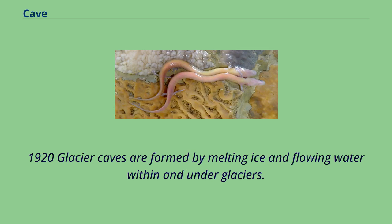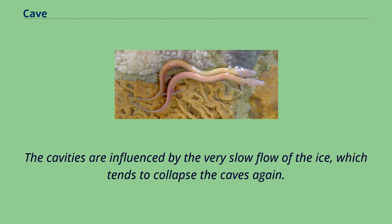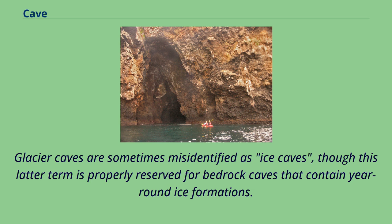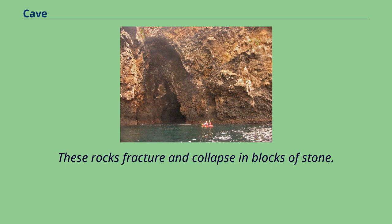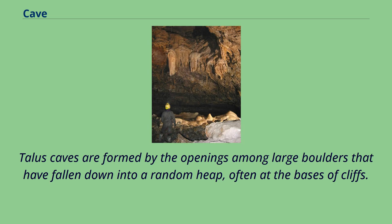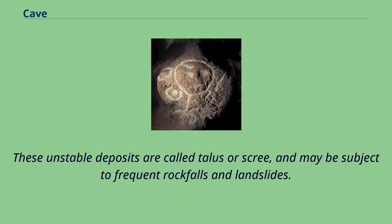Glacier caves are formed by melting ice and flowing water within and under glaciers. The cavities are influenced by the very slow flow of the ice, which tends to collapse the caves again. Glacier caves are sometimes misidentified as ice caves, though this latter term is properly reserved for bedrock caves that contain year-round ice formations. Fracture caves are formed when layers of more soluble minerals, such as gypsum, dissolve out from between layers of less soluble rock. These rocks fracture and collapse in blocks of stone. Talus caves are formed by the openings among large boulders that have fallen into a random heap, often at the bases of cliffs. These unstable deposits are called talus or scree, and may be subject to frequent rockfalls and landslides.